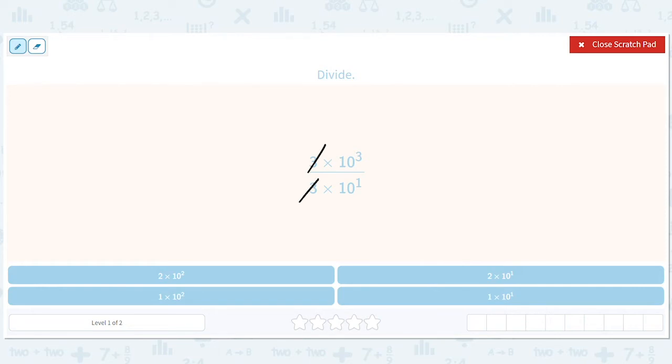So you have three and the three cancel out, and then the way you divide 10 to the third by 10 to the first is you subtract exponents, as you know. So you should get the answer is 10 to the second.